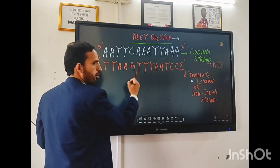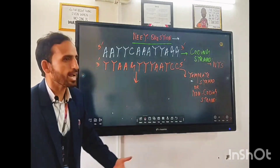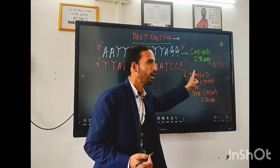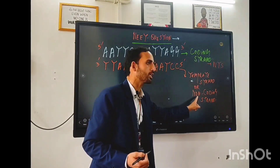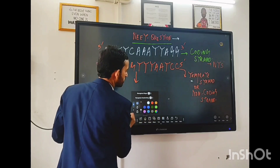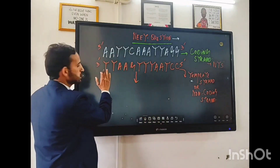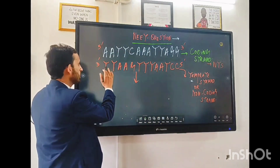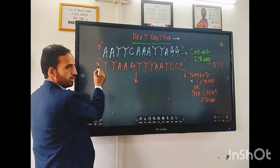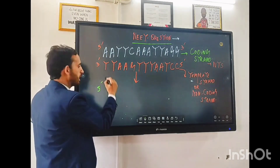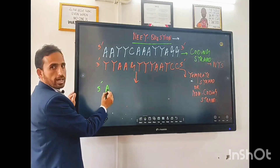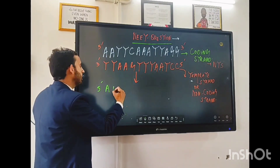Now let us see how the mRNA will be formed. As I told you, the strand from which mRNA is formed is known as the template strand, or it is also known as the non-coding strand. Let us see what kind of answer we will get. Here it is thymine — instead of thymine, you will get adenine in the mRNA strand. So here with thymine, you will get adenine.